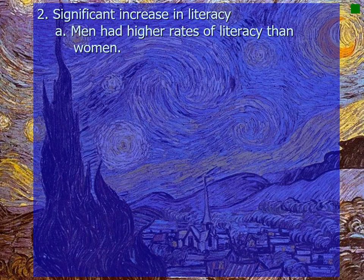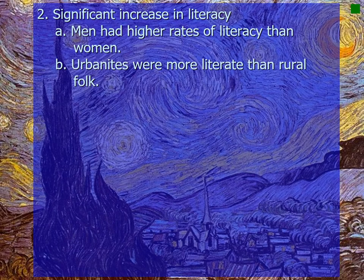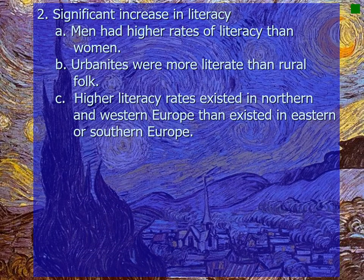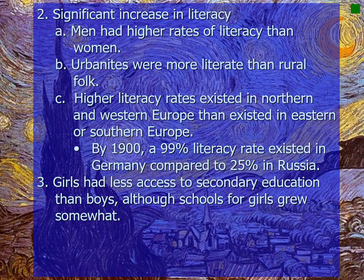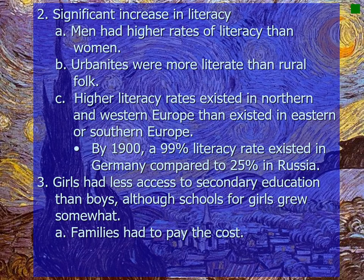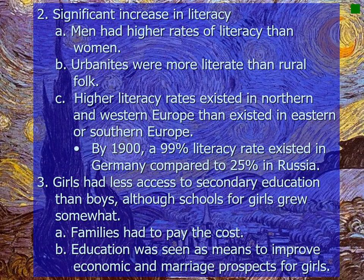Men had higher rates of literacy than women, and urbanites were more literate than rural folk. Higher literacy rates existed in Northern and Western Europe than in Eastern or Southern Europe. By 1900, a 99% literacy rate existed in Germany compared to a 25% literacy rate in Russia — a huge difference. Girls had less access to secondary education than boys, though schools for girls grew somewhat. Education was seen as a means to improve economic and marriage prospects for girls.